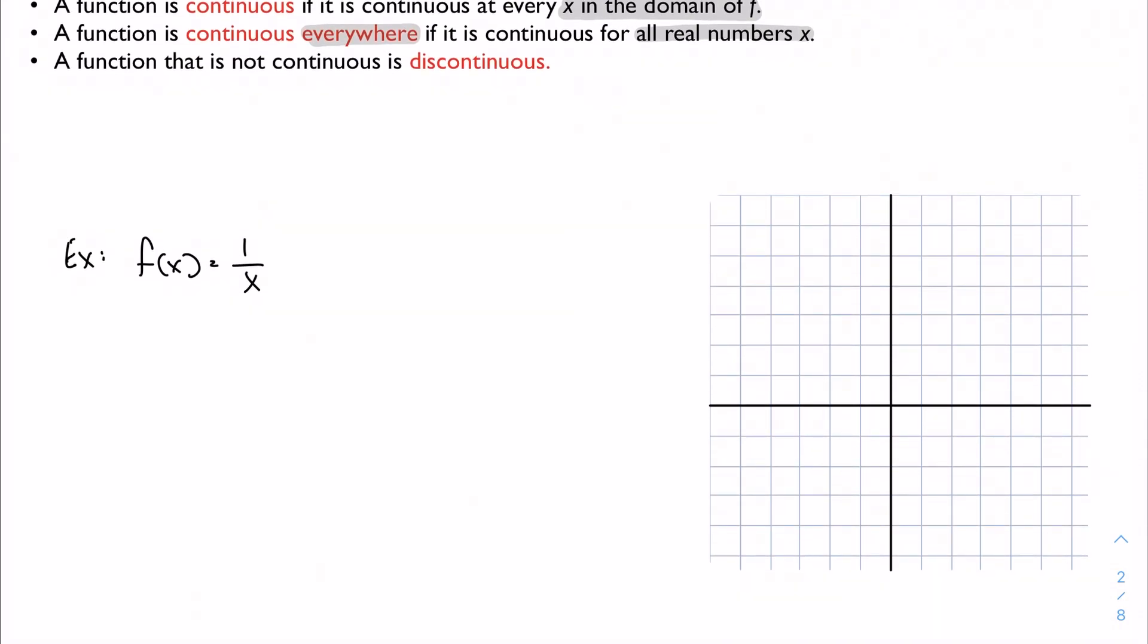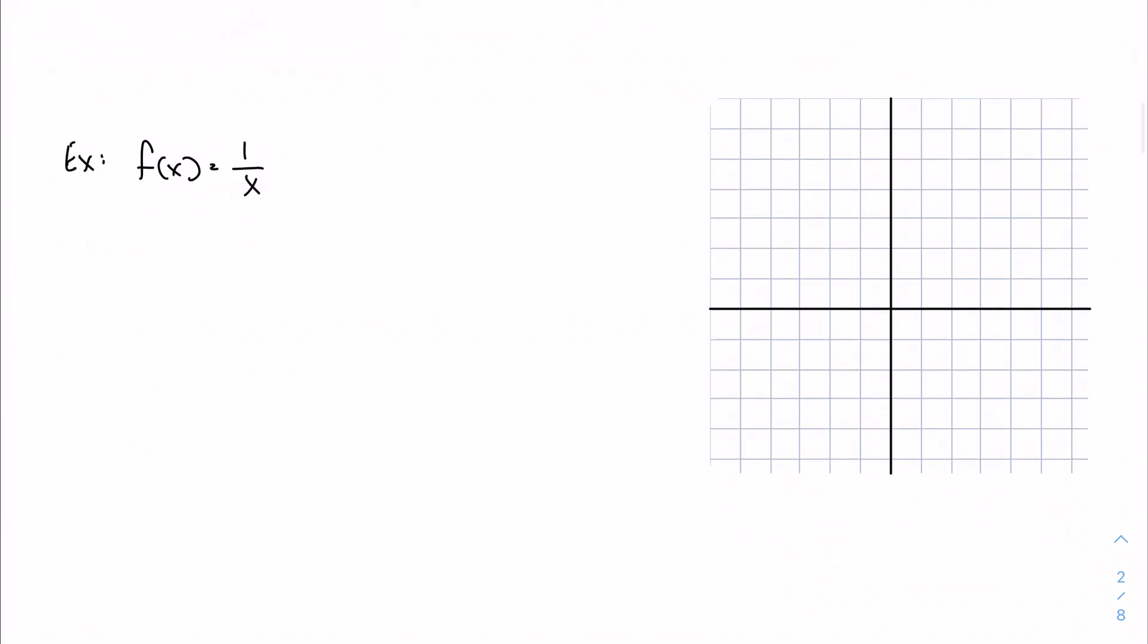Let's consider something like f(x) = 1/x. Let's just get a quick sketch of the function. Something that looks vaguely like this, and then over here. I've got asymptotes on the axes.